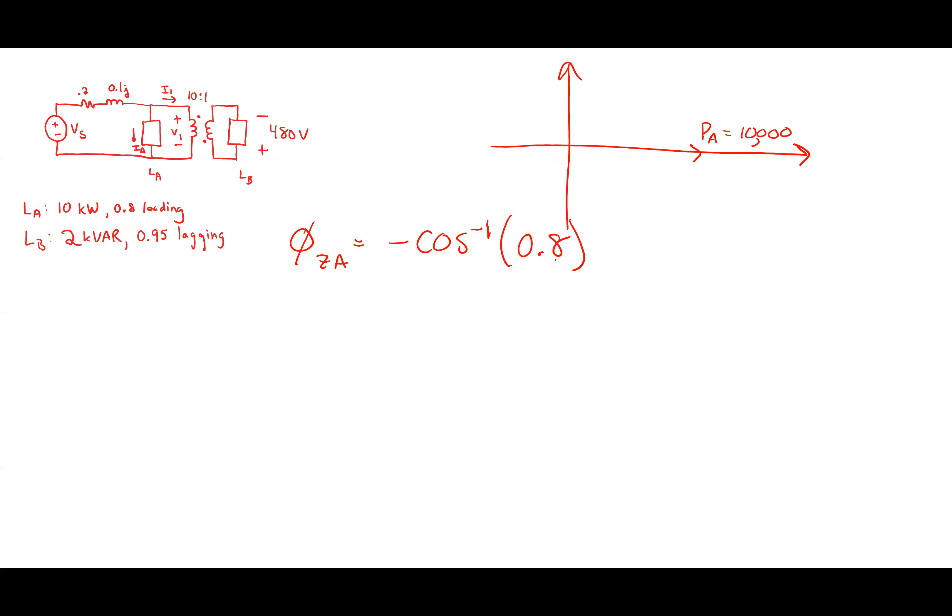I have to think about the sign: I can't just take the inverse cosine of the power factor. I put the negative in because it's leading. If it were lagging, the angle would be positive. For leading, I throw in the negative myself to indicate the angle points into the fourth quadrant. So phi_ZA equals negative 36.8699 degrees.